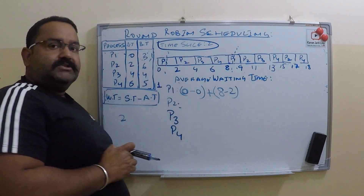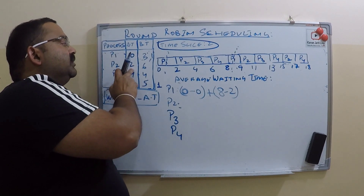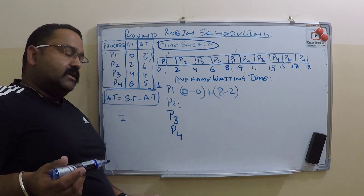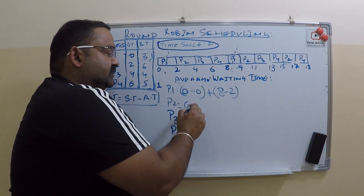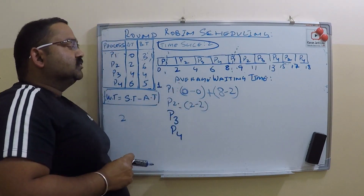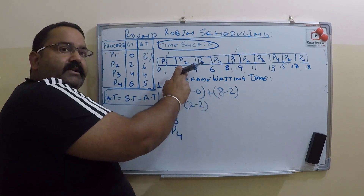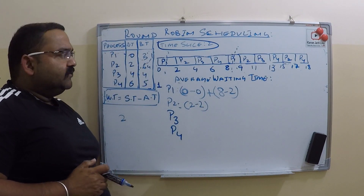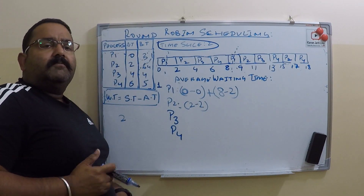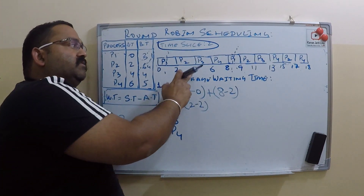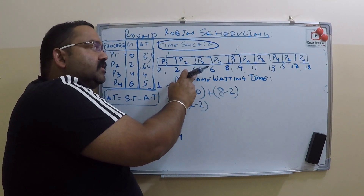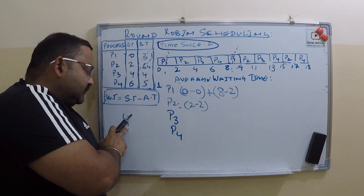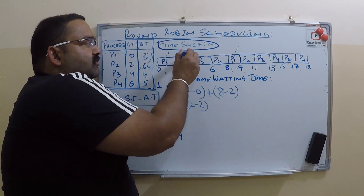Now let's go to P2. P2 arrived at time 2, and at the same time it got the processor. So start time is 2, arrival time is 2 — giving 0 for the first slice. When it finished 2 seconds, 4 seconds of burst were still left. So P2 went back to the wait queue at time 4.